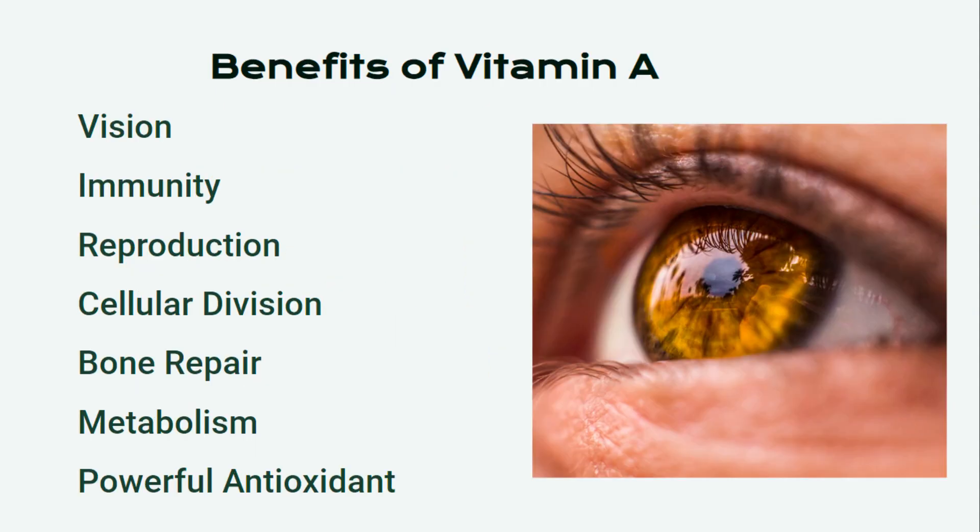Vitamin A is essential for vision, especially night vision, as it forms the visual pigment rhodopsin in the retina. It supports immune function by maintaining the integrity of skin and mucosal cells, activating the thymus gland, and fortifying the protective qi to prevent penetration by viruses. Vitamin A also plays a critical role in cellular communication, growth, and cellular differentiation during fetal development. Additionally, it is involved in bone repair, essential for protein metabolism, and greatly enhances the production of RNA.